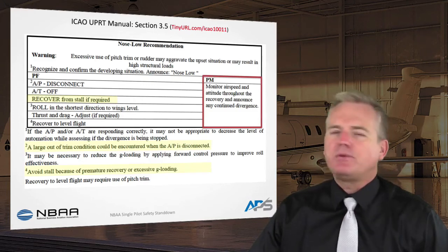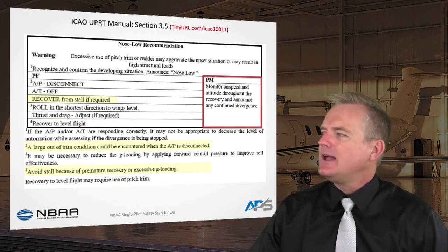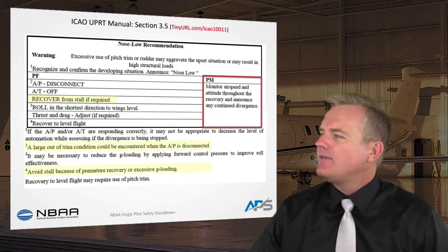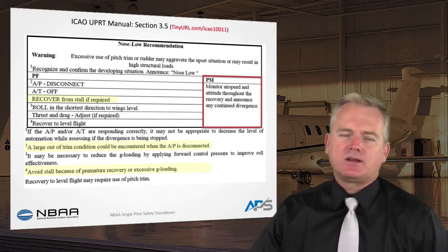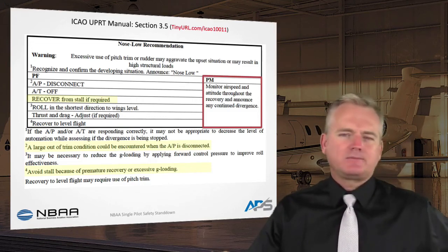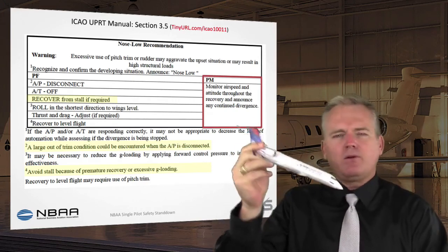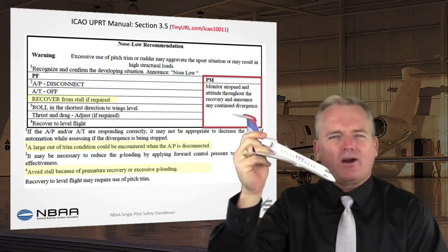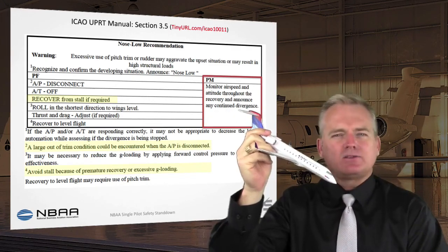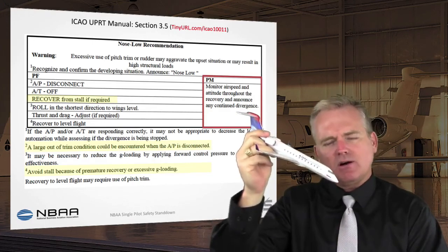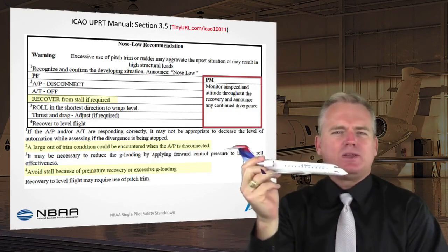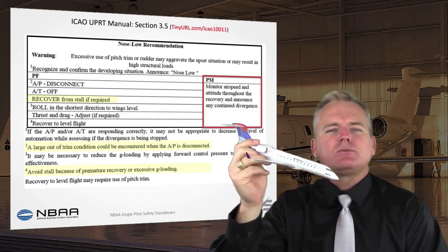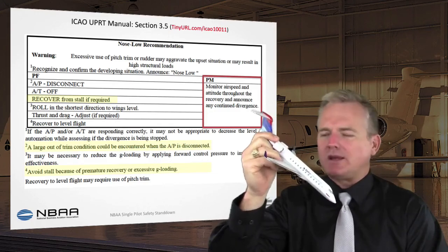Now let's look at the ICAO manual section 3.5 on the nose-low recommendation — available at tinyurl.com/1001 1001. Everyone assumes that if the airplane is nose-low, simply pulling back is the recovery. But the question is: why did you get there? Very often it's because the airplane is stalled, and if you are stalled and nose-low, pulling only makes it worse. What you must do is push and reduce angle of attack to reattach the airflow to the wings and regain control.